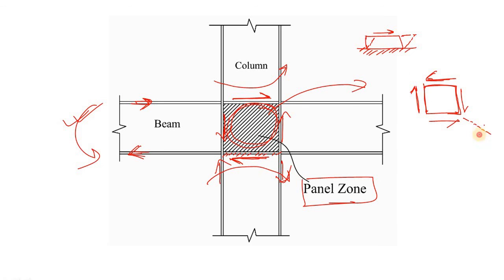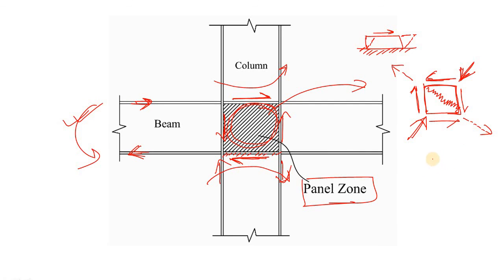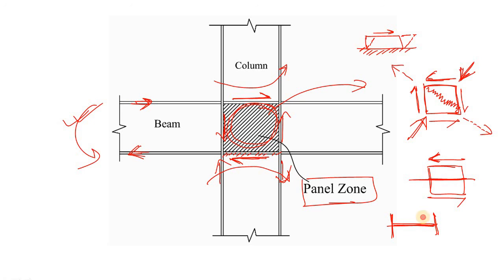In this panel zone, the resultant forces act diagonally — tension in one diagonal direction and compression in the other. Due to the resultant compressive force, this zone tries to buckle. You can also visualize it this way: the shear force acting on the panel zone must be carried through the web part of the column I-section, and if the web is not thick enough, it will fail in shear.